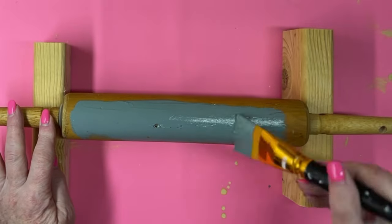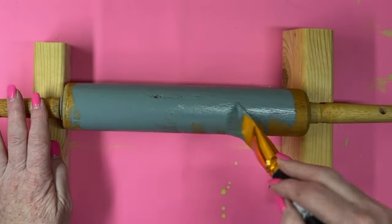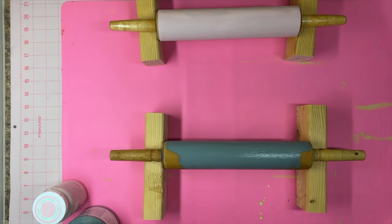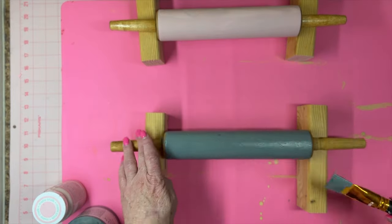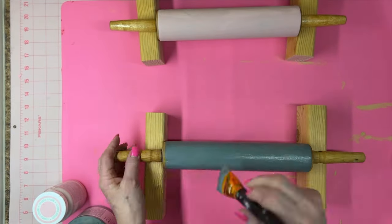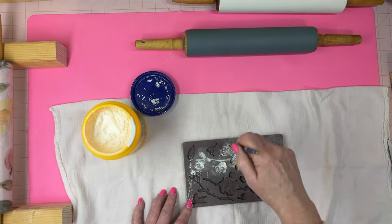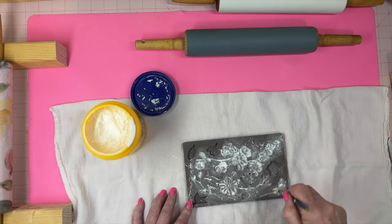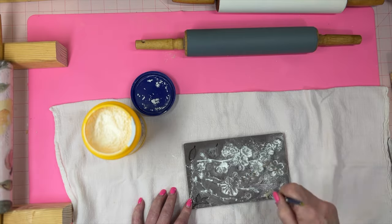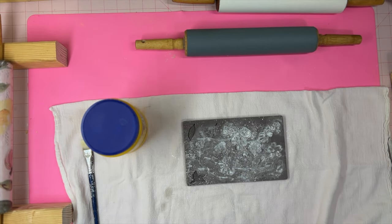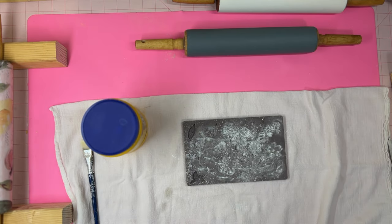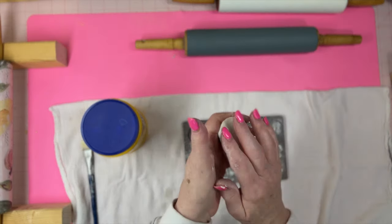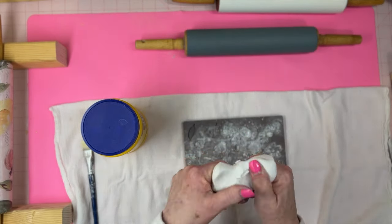For rolling pin number two, I used Fusion Mineral Paint in the color Blue Pine, and this time I used the Redesign by Prima Cherry Blossom Mold. I cover the whole mold in cornstarch because I want to do a lot of flowers. Once you get all the cornstarch in, I took it to the trash can, I dumped out the excess, and now it's all ready for the clay. Again, I take out my clay, and I work it a little in my hands to warm it up. It makes it a lot easier to work with.